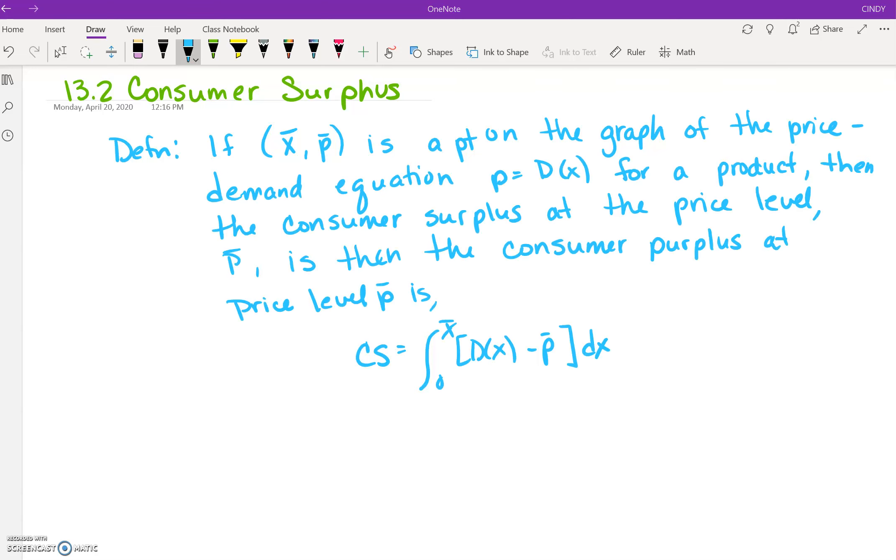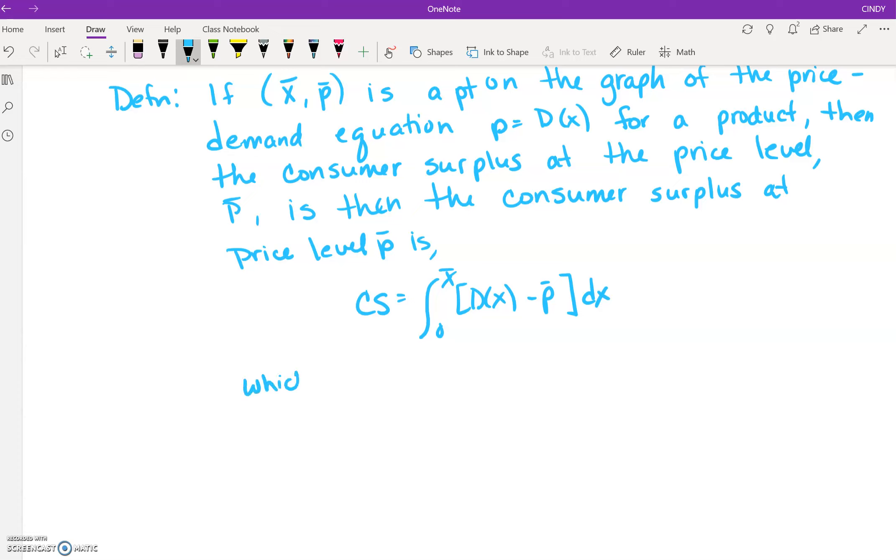I went ahead and wrote this. The graph of the price-demand equation is p equals D(x) for the product, then the consumer surplus at the price level p̄ is given by the equation CS equals the integral between zero and x̄ of D(x) minus p̄ dx. Which is the area between p equals p̄ from x equals 0 to x equals x̄.